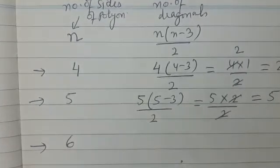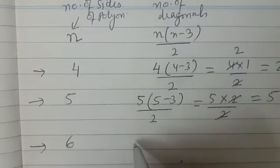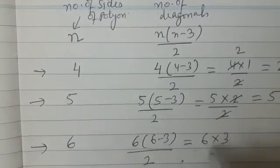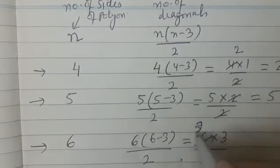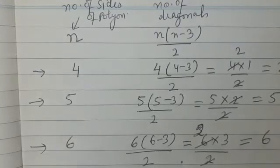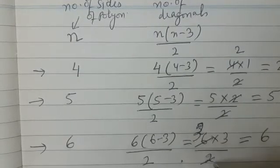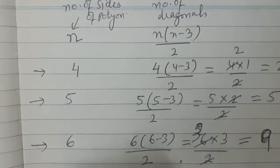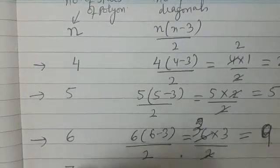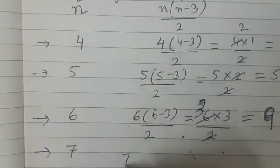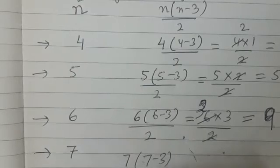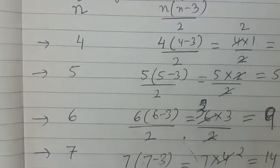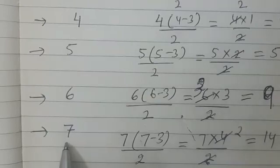For a hexagon, N = 6: 6 × (6 − 3) / 2 = 6 × 3 / 2 = 9 diagonals. And for a heptagon, N = 7: 7 × (7 − 3) / 2 = 7 × 4 / 2 = 14 diagonals.